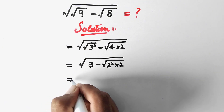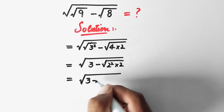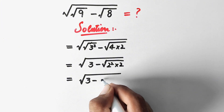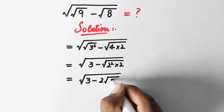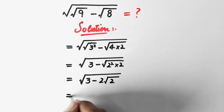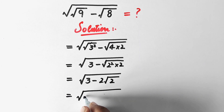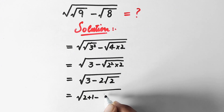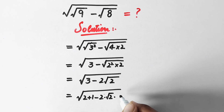So in the next step, we have square root of 3 minus 2 times square root of 2. And what we do next is we can write these values as square root of (3), where 3 is the same as 2 plus 1, minus 2 times square root 2 times 1.